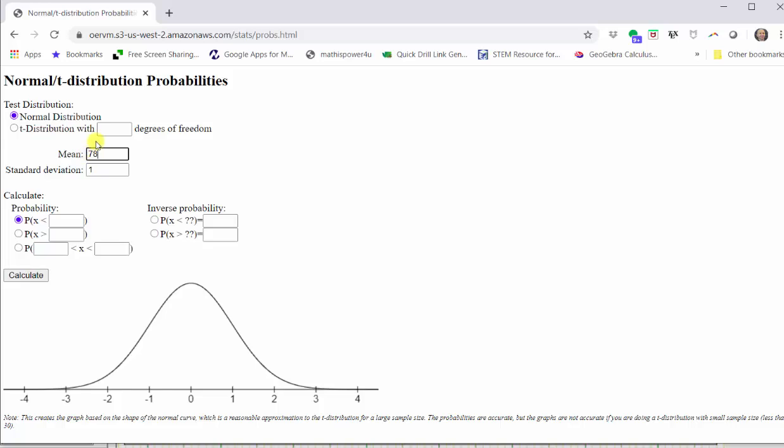The mean is 78, tab. The standard deviation is 6.4. Next, we use one of these three options on the left for probability and we use one of these two options on the right for inverse probability. We are determining probability and therefore, we will be using these three options on the left.